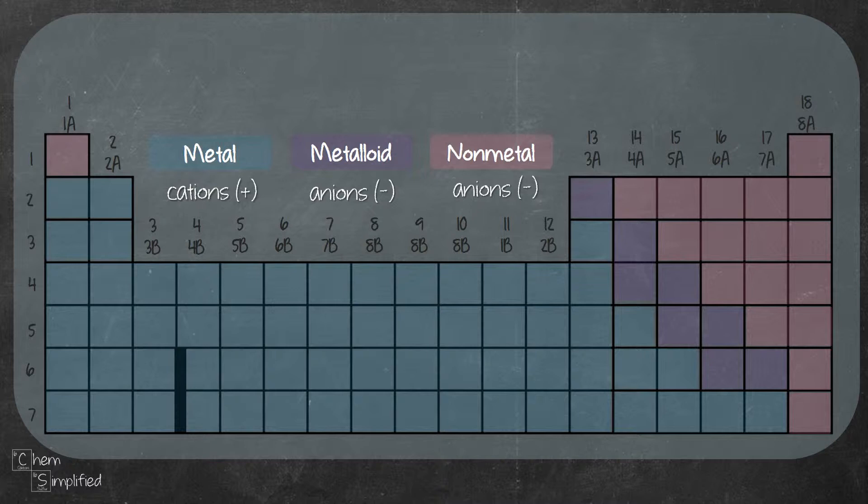Generally, the charges on metals in the main group will follow the group number. Meaning, group 1 elements will have a +1 charge. This is because it's easier to give away 1 valence electron to achieve octet like noble gases, which makes them very stable.